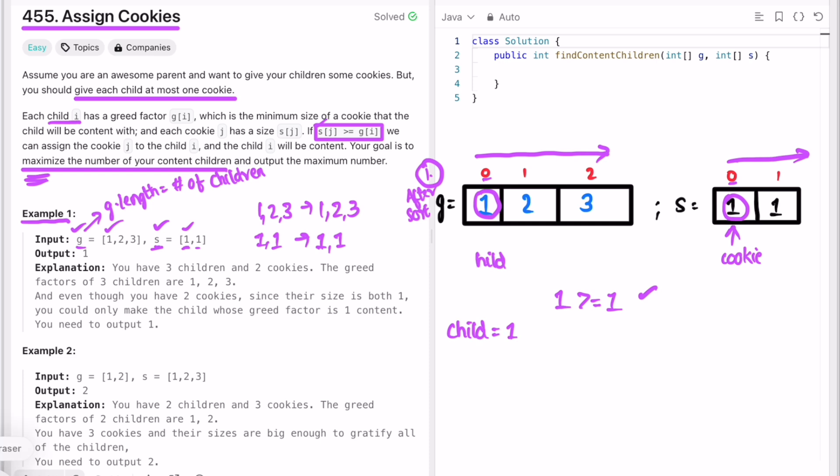Yes, so increment child. Child is one now, so move child forward. This cookie has already been assigned to this child, so we need to increment cookie too. Now we check: is the cookie size greater than or equal to the greed of the child, which is two?